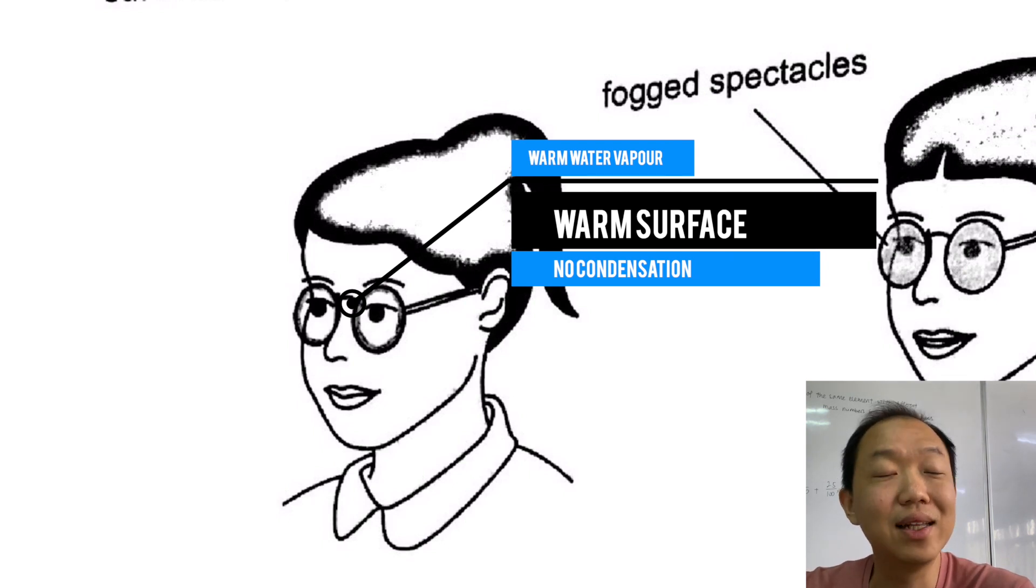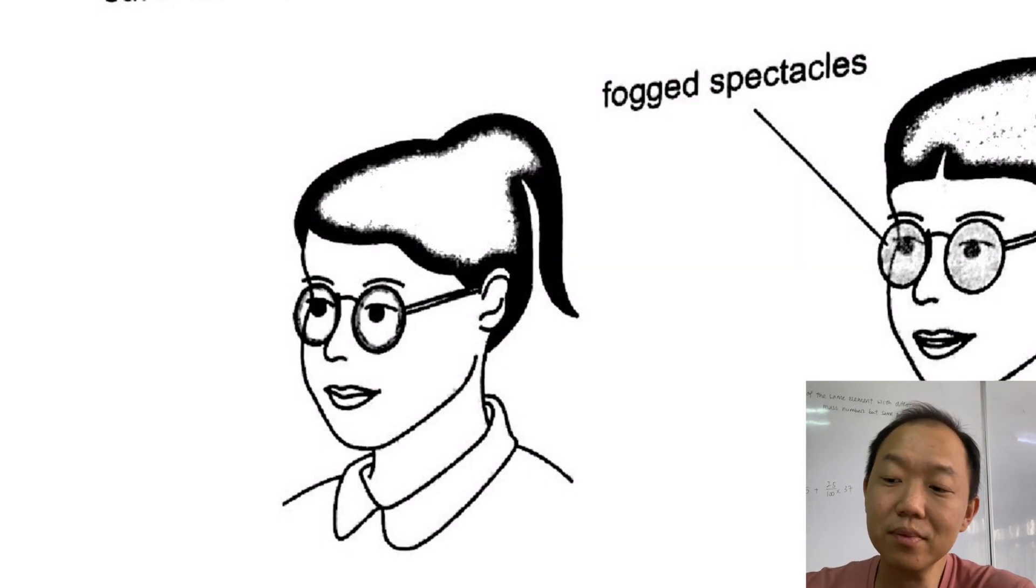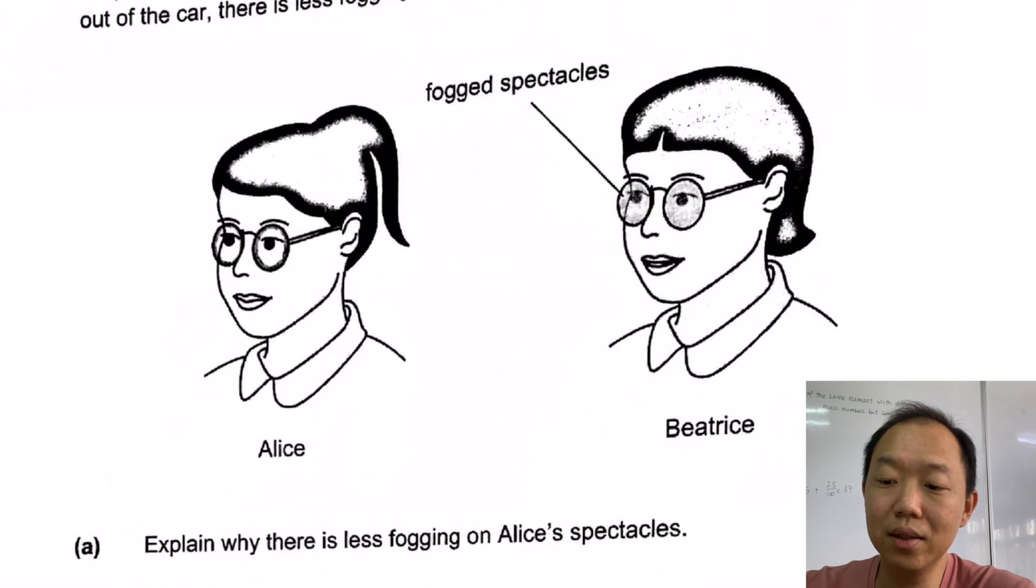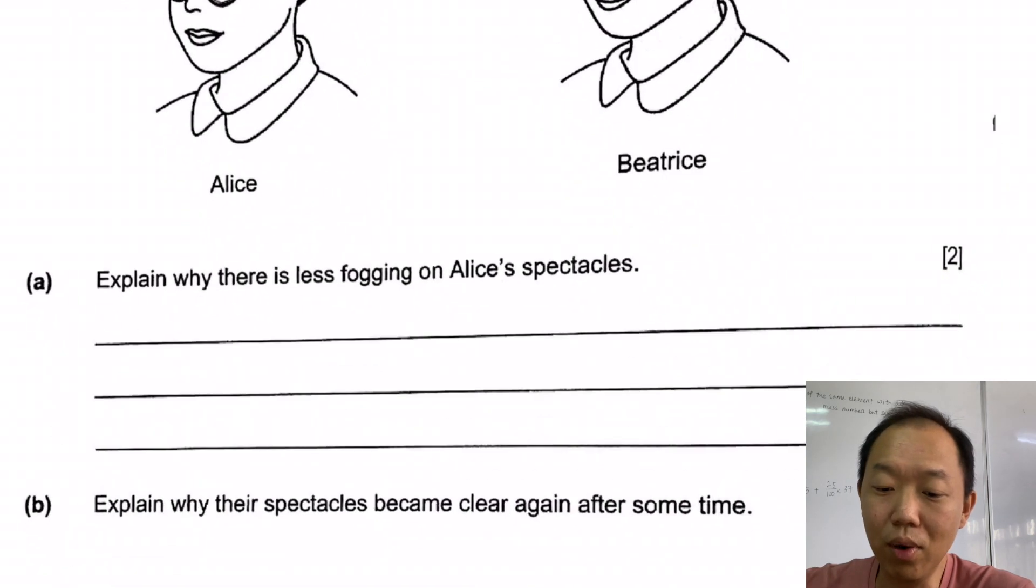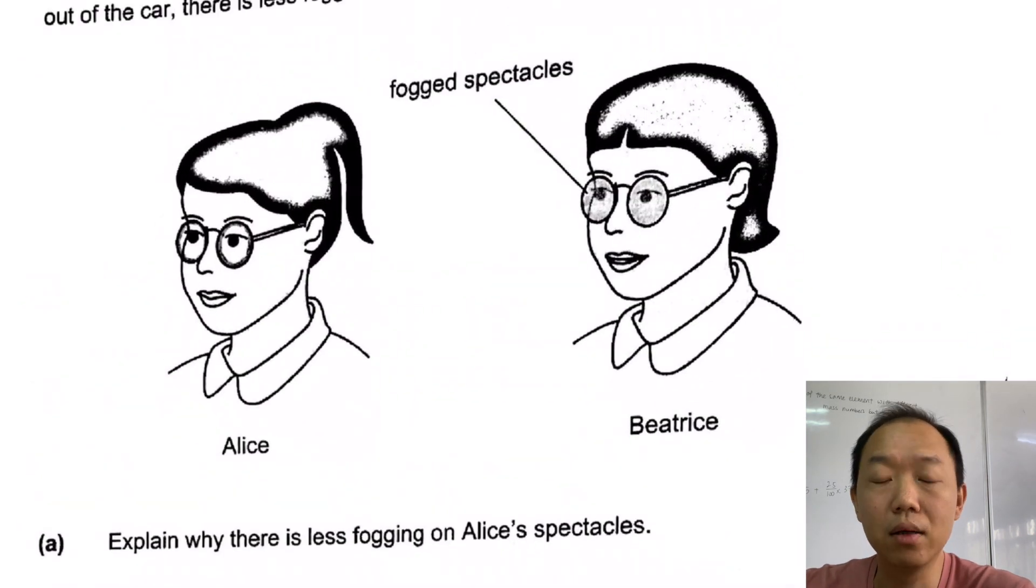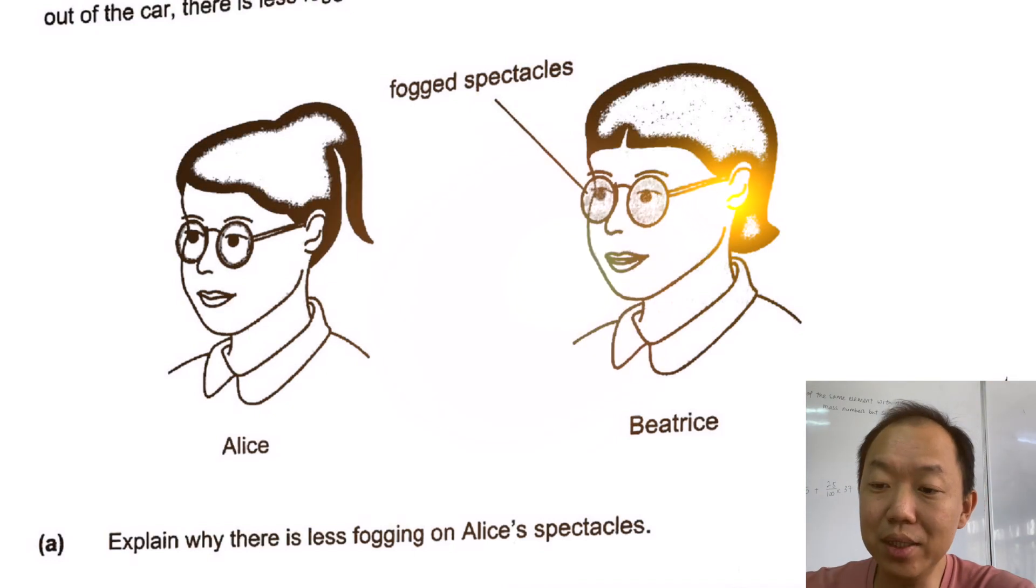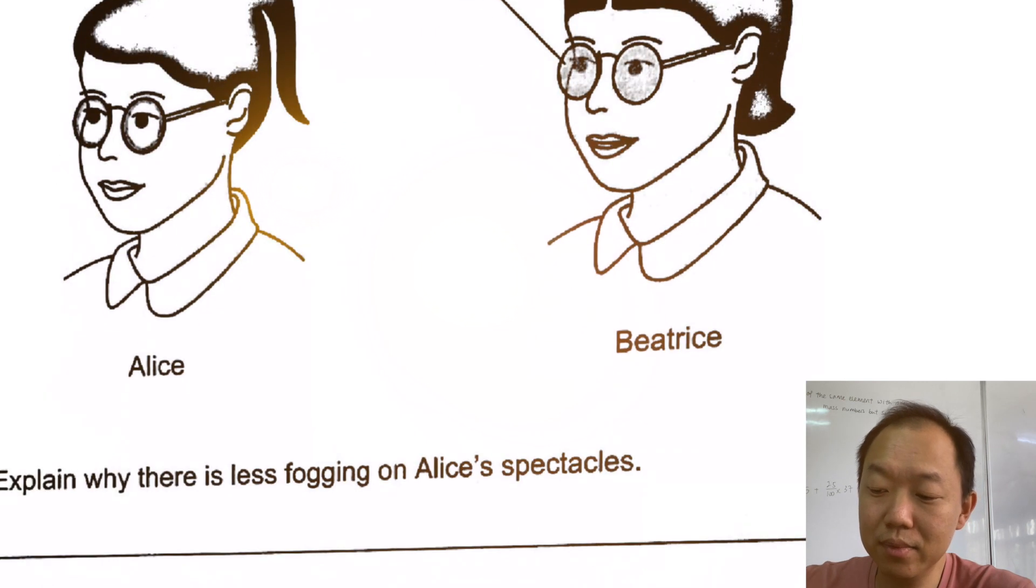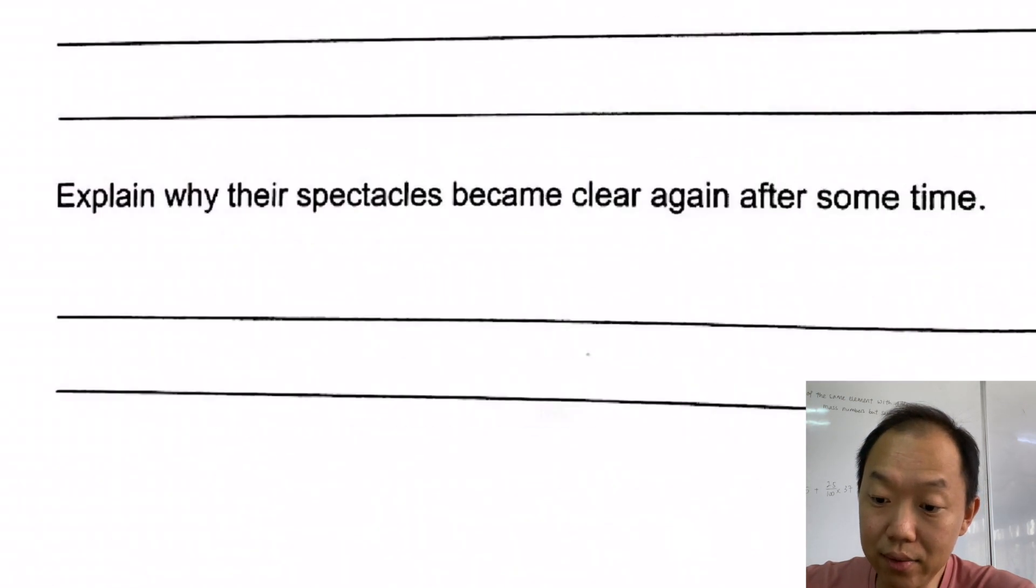Whereas on Alice's spectacles, which has got a higher temperature than Beatrice's spectacles, it is not going to condense so much, or rather there is less condensation, because the warm water vapour does not lose heat. Over here, the warm water vapour loses heat, so we get condensation, and Beatrice has got a fogged spectacle. Why does spectacles become clean after some time? Because Beatrice's spectacles gain heat after some time because she is no longer in the air con, and therefore no more condensation. That's the end of the paper.